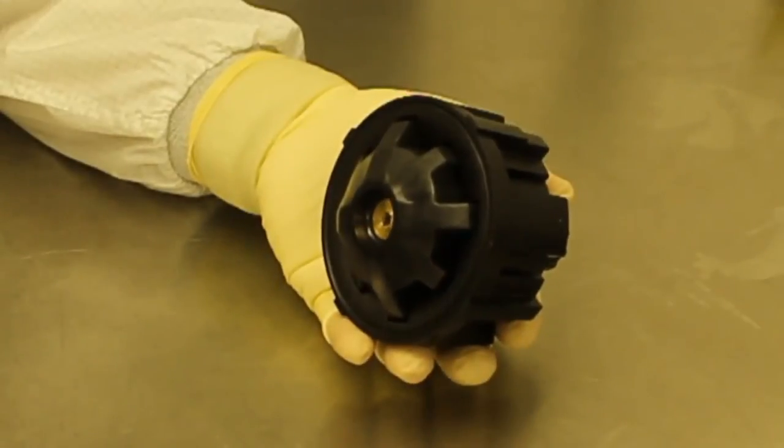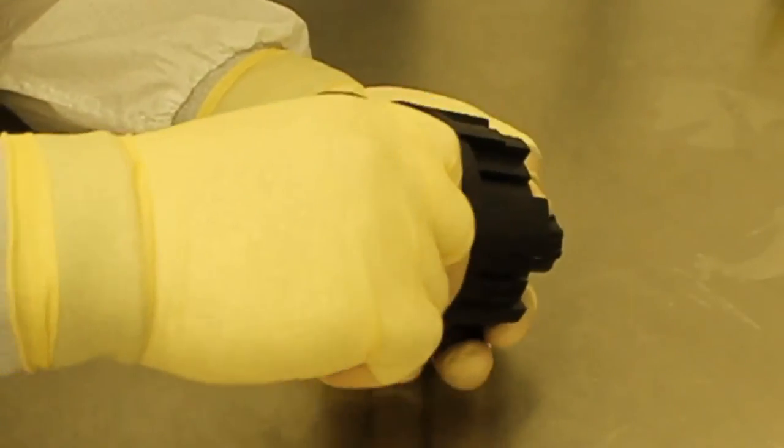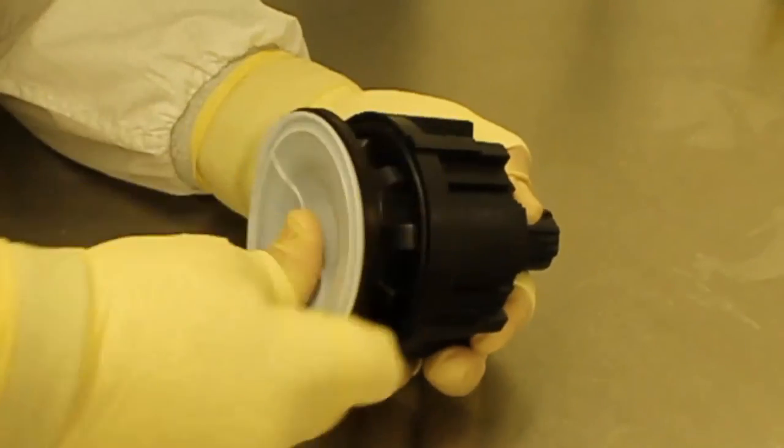Take the new diaphragm and ensuring the compressor is aligned as previously described, screw on the diaphragm until hand tight. Then, back it off one quarter turn.